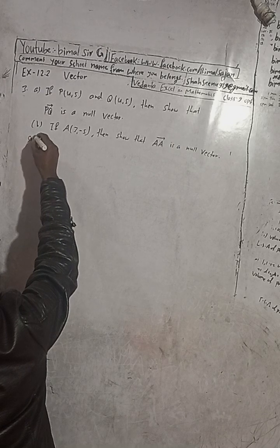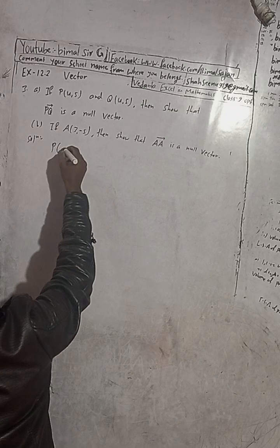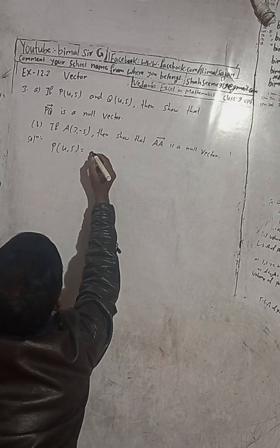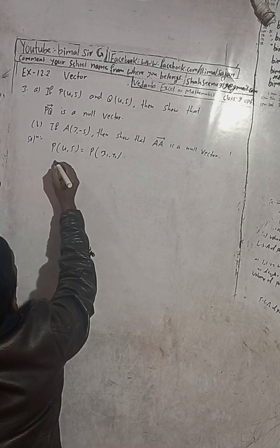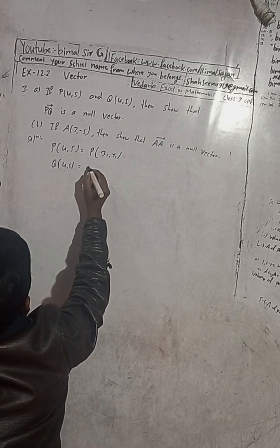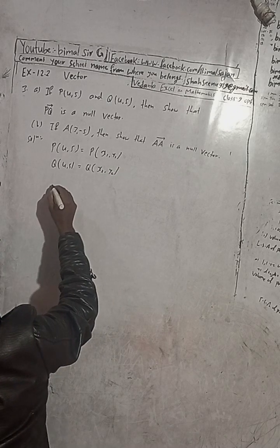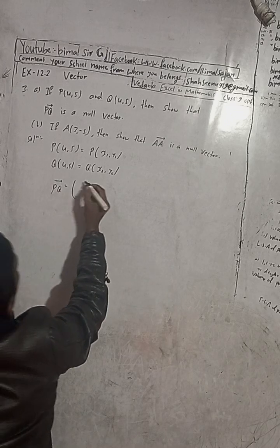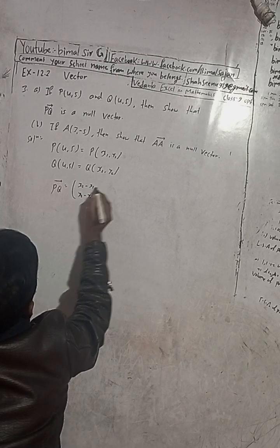Here P(4,5) is equal to P(x1, y1), and Q(4,5) is equal to Q(x2, y2). So now PQ vector is equal to (x2 minus x1, y2 minus y1).